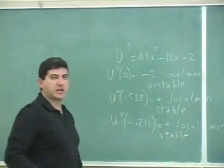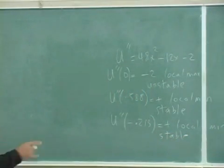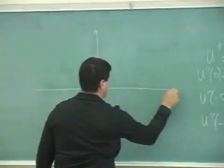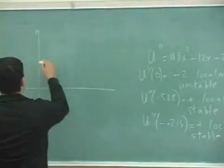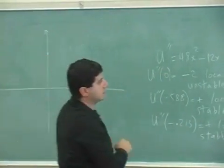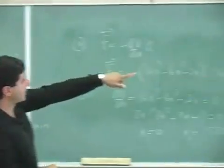So I'm going to draw a rough graph of what the potential energy function looks like. This one yields local max, so let's see here. U(0) is equal to negative 4, right?